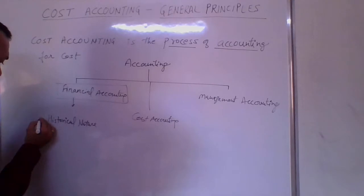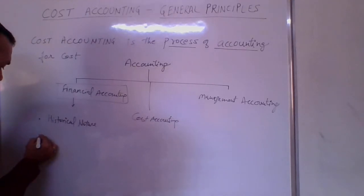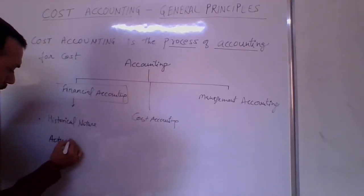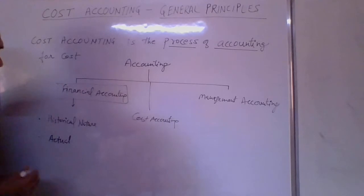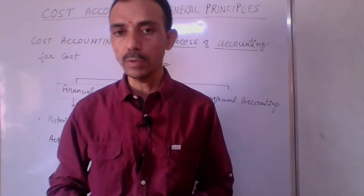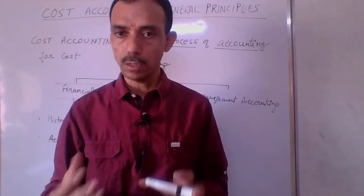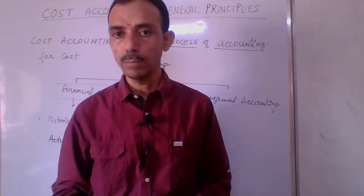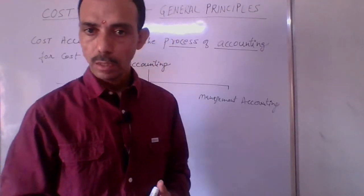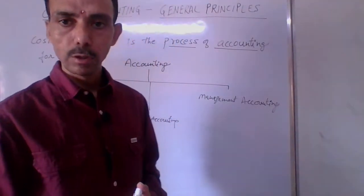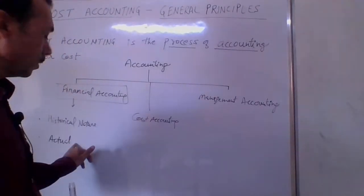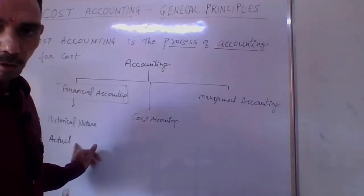Second, under financial accounting, these are actual expenses. Why actual expenses? Because once we have spent the amount on a particular head, we then record the account in the books. Therefore, whatever transactions are recorded in financial accounting are actual.